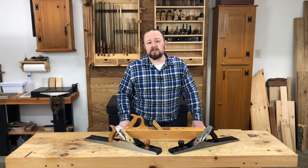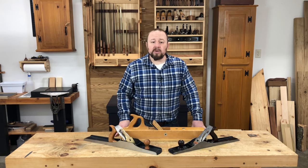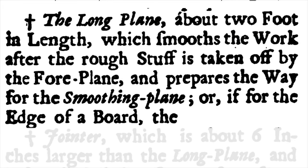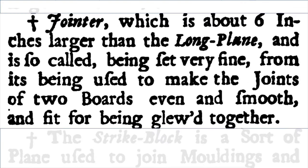Jumping ahead about 50 years to 1738, Richard Neve wrote the City and Country Purchasers and Builders Dictionary. In this book, Neve describes the jointer plane and long plane as two distinctly different planes. The long plane, about two foot in length, smooths the work after the rough stuff is taken off by the foreplane and prepares the way for the smoothing plane, or if for the edge of a board, the jointer, which is about six inches larger than the long plane and is so called being used to make the joints of two boards even and smooth and fit for being glued together.